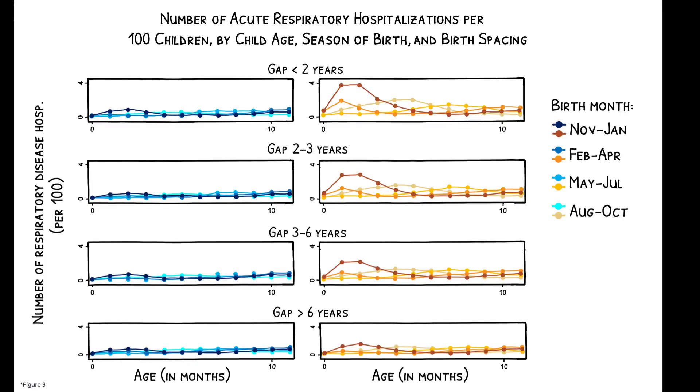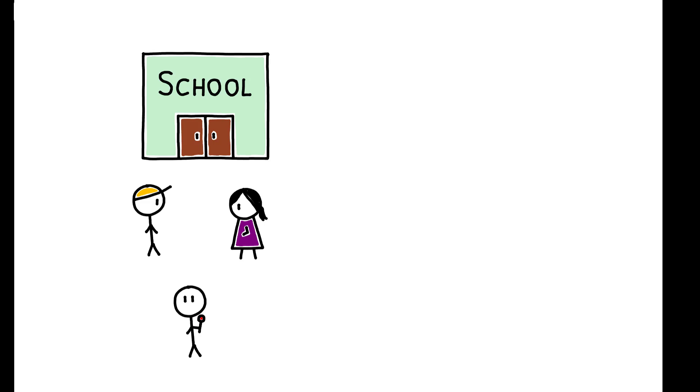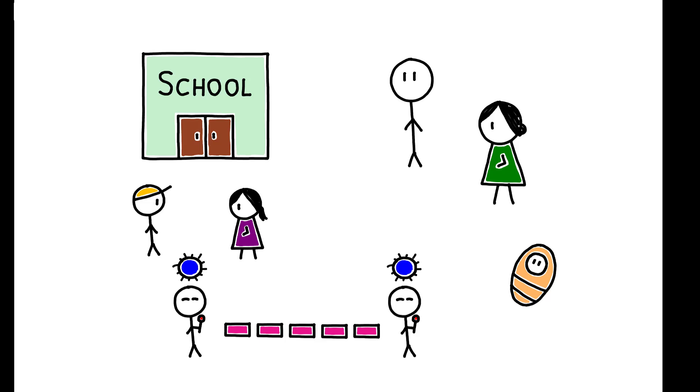Differences in hospitalizations are also larger for siblings with shorter birth spacing, who may be more prone to the kind of close contact with one another that facilitates virus transmission. Overall, these patterns are consistent with a narrative in which older children bring home common viruses that put their younger siblings at heightened risk of severe respiratory illness in the first few months of life.